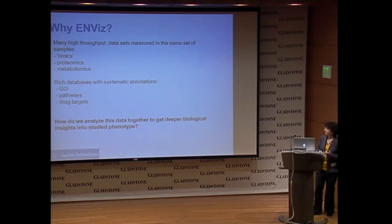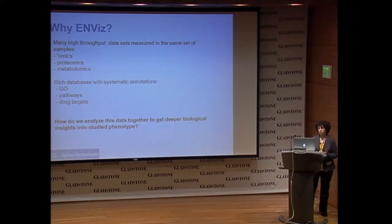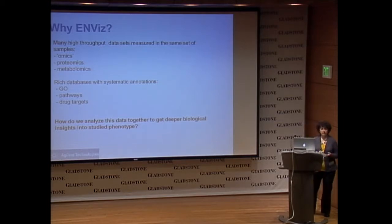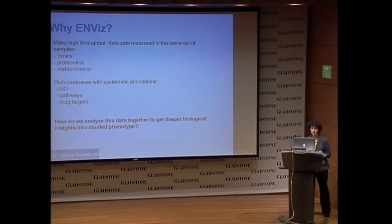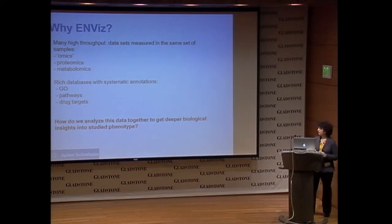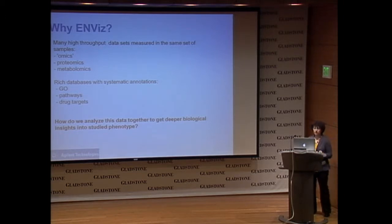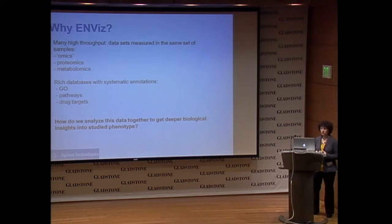So why Envis? As we heard yesterday, these days there are many high-throughput datasets measured in the same set of samples. Some of these datasets are omics datasets — genomics, gene expression, non-coding RNA expression, proteomics, and metabolomics datasets. Together with that, there are a lot of databases with rich systematic annotations, like GO, pathway databases like KEGG, WikiPathways, drug target databases, and others. So the question we asked was: how do we analyze this data structure together to get deeper biological insights into studied phenotypes?